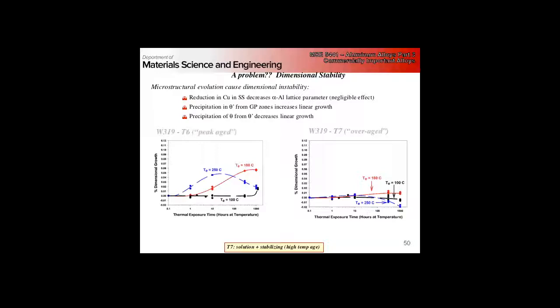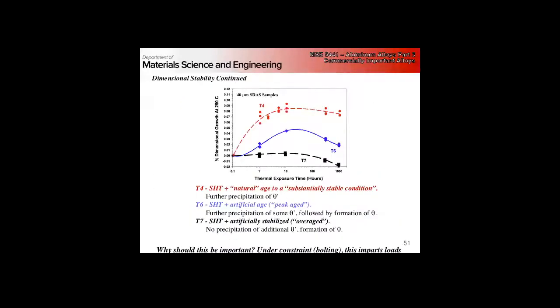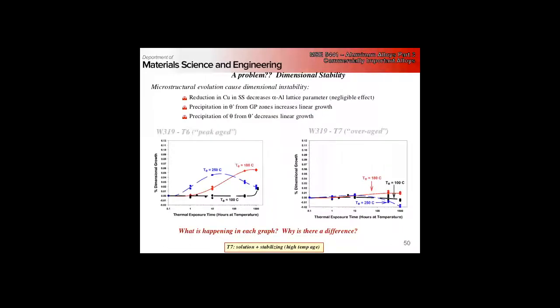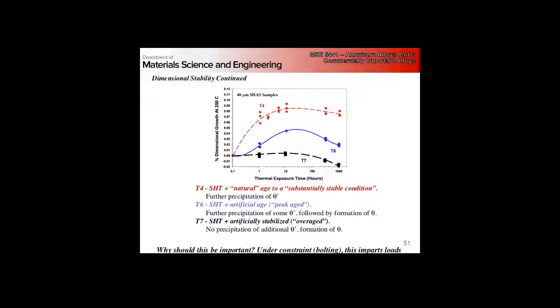As we go from theta prime, then as we nucleate and grow our theta phase, remember theta was that nice ordered intermetallic structure. So a more closed packed structure than the other intermediate phases, we start to shrink again. Whereas the overage case, you basically stay where we are. This is the dimensional growth at 250 C for different tempers.